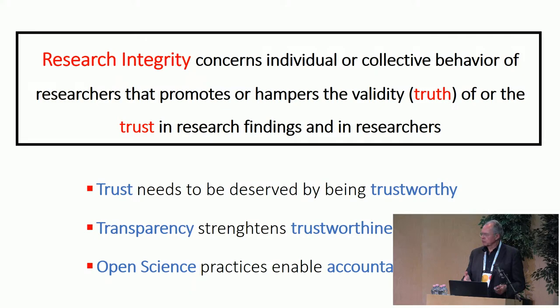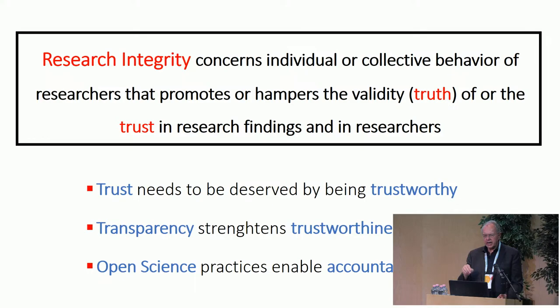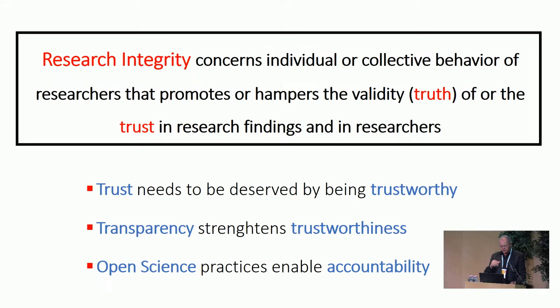Let me start by explaining what I mean by research integrity. To me and to many other people, research integrity is about behavior — behavior of individual investigators and also of collectives of investigators — and that behavior only insofar as it improves or deteriorates truth-finding, validity, and trust in research. You have societal trust in research and you have trust between researchers. You need both, because when researchers cannot trust each other, you cannot progress on the work that has been done by your predecessors.